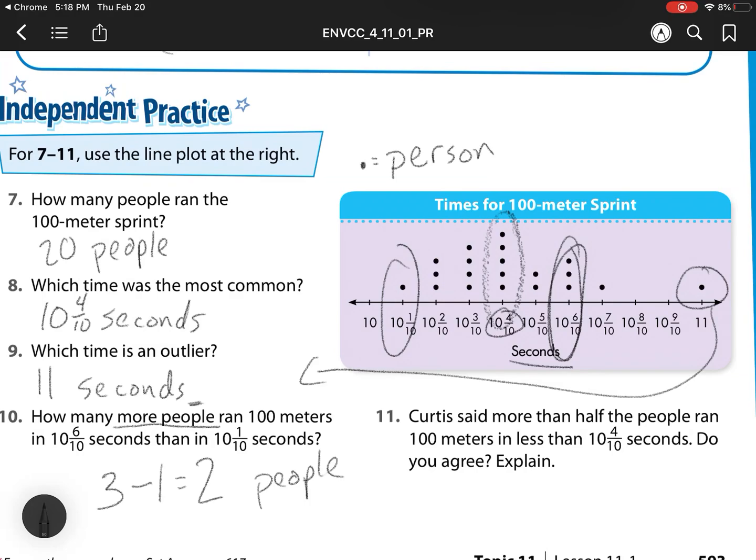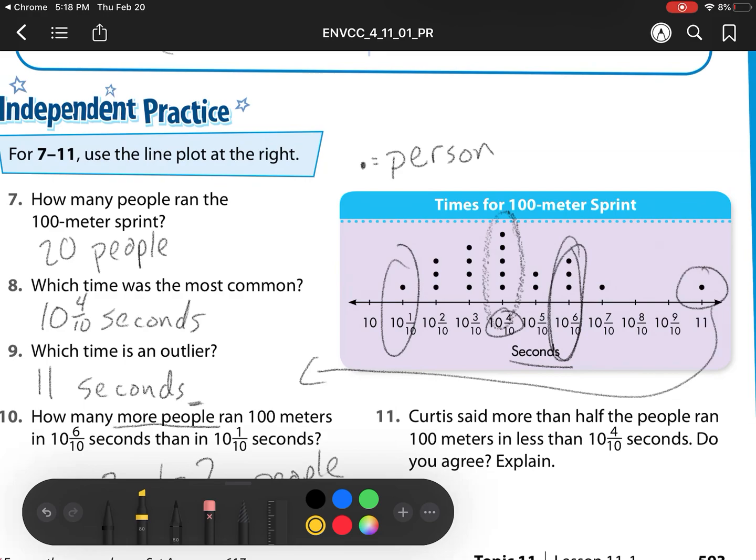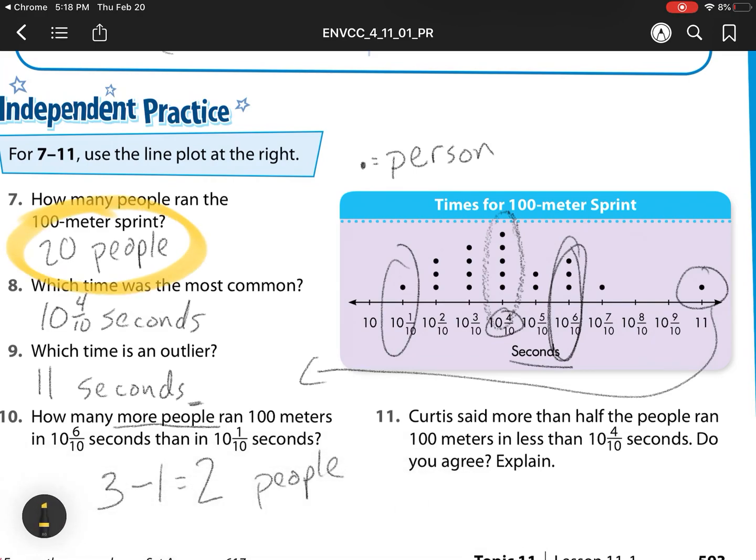Our next one says, Curtis said more than half of the people ran 100 meters in less than 4 or 10 and 4 tenths of a second. Do you agree? So we have half of 20 is 10. Remember, there's 20 people over here. So half of 20 would be 10.